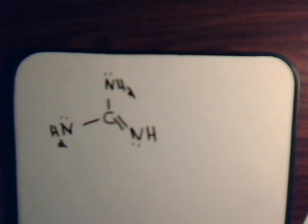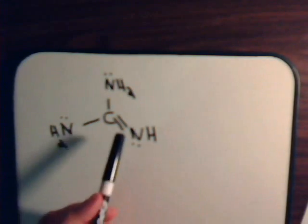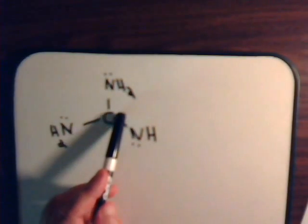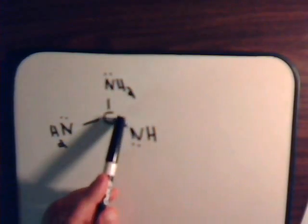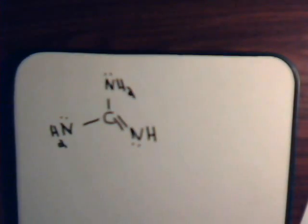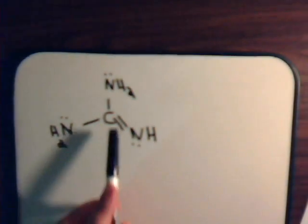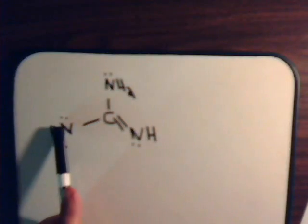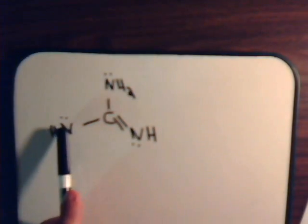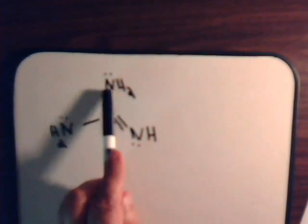Now what kind of resonance structures can we form? Here we have overlapping pi electrons in this pi bond, and then this nitrogen has a lone pi electron pair here, and so does this one.